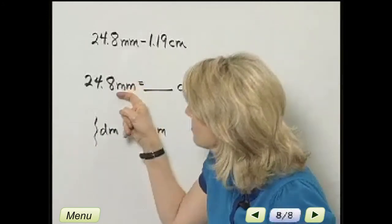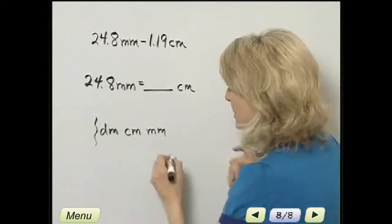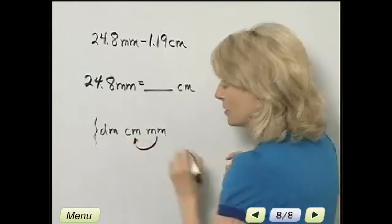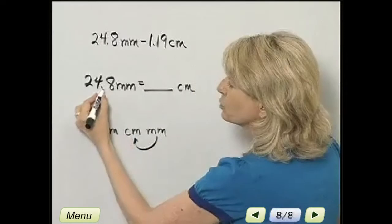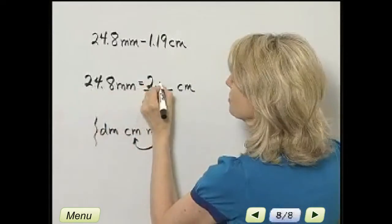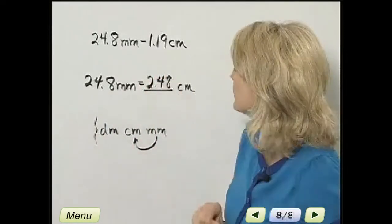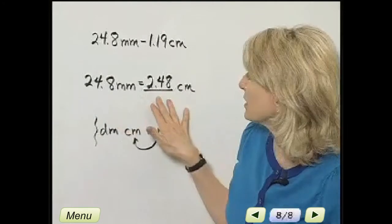Going from millimeters, we want to get centimeters, we move one place to the left. So moving this one place to the left, it's 2 decimal 48 centimeters. So let's keep that in mind.